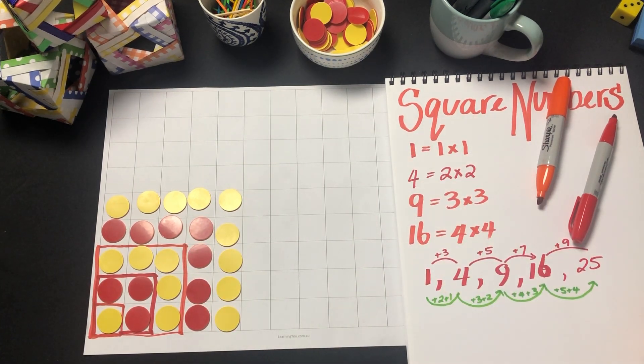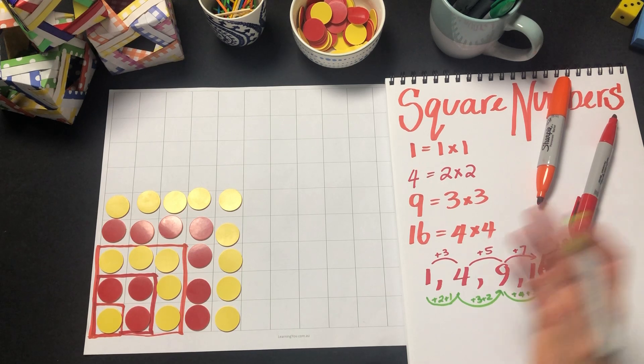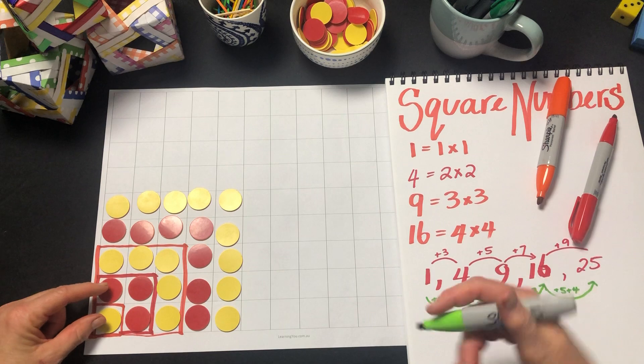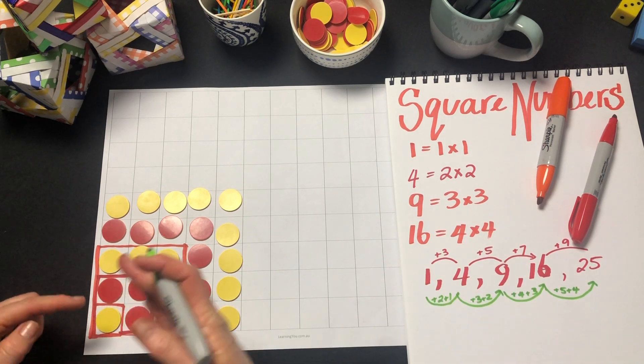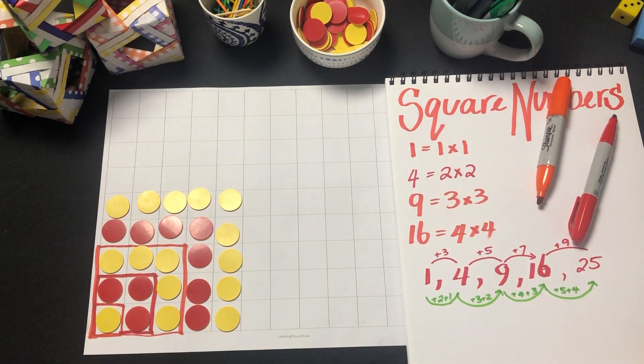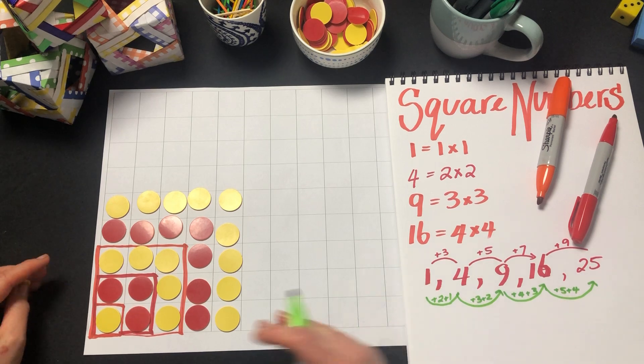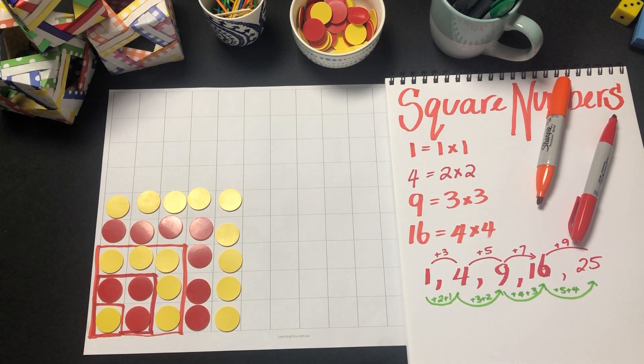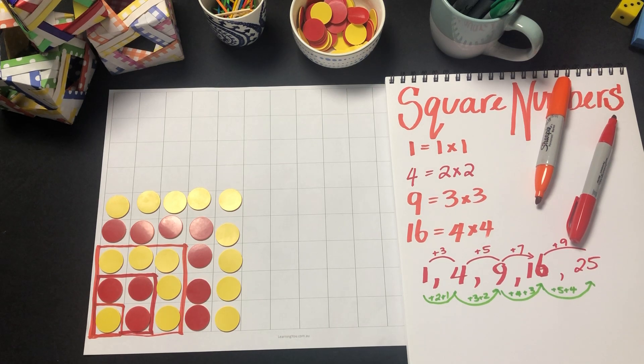not just recall the square numbers as something that they've learned as special numbers to be repeated or just recalled, but actually see how they grow the pattern. And certainly they need to link it to that square shape that's being created, because that's what makes it a square.